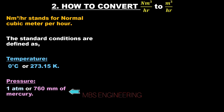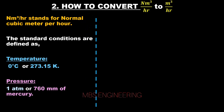Everyone is aware of the ideal gas law. The ideal gas equation is PV = NRT. The ideal gas law equation applied to two states gives us P1V1/T1 = P2V2/T2.